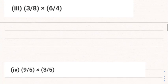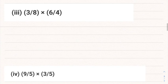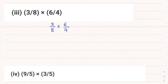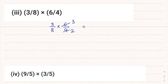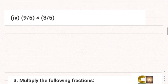Third part: 3/8 multiplied by 6/4. Here 6 and 4 are both in the table of 2, so we cancel them — 2 threes are 6, and 2 twos are 4. Now 3 into 3 is 9 and the denominator is 8 into 2 that is 16, so the answer is 9/16. We cannot simplify this further.